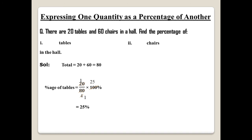Similarly for the chairs: the percentage of chairs equals 60 over 80 multiplied by 100 percent. Cancel the zeros of 60 and 80, then cancel 6 and 8 by dividing by 2, giving 3 and 4. Then cancel 4 with 100, just like the previous question, giving 25. So the answer is 3 multiplied by 25 equals 75 percent.